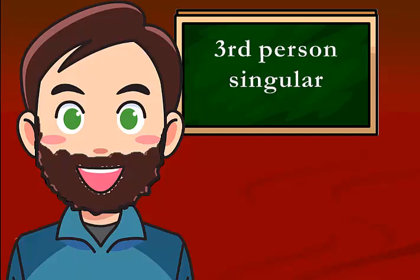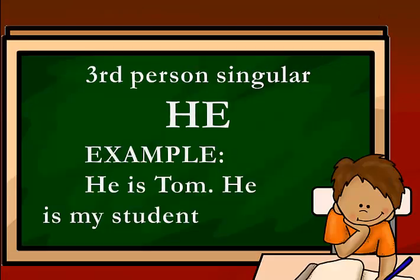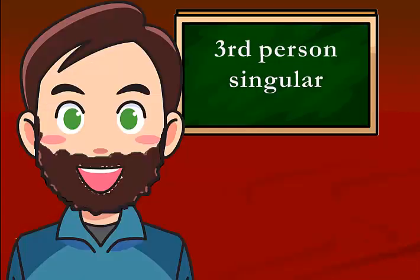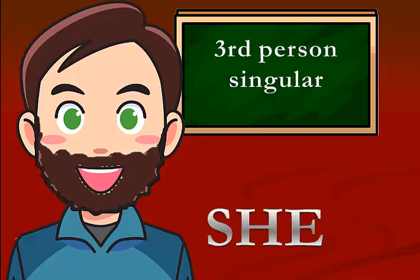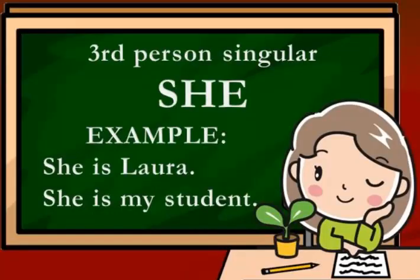For the third person singular, we have he. He is Tom — he is my student. Also, she. For example, she is Laura. She is my student.